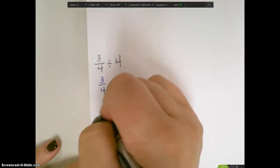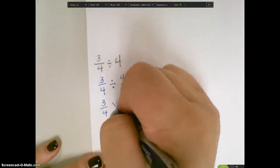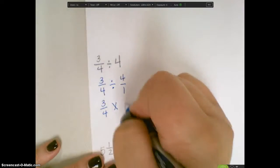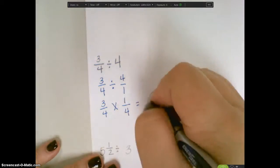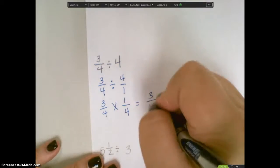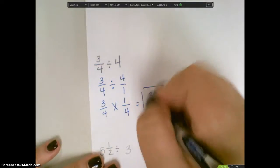Then I can keep the first fraction, change my division to multiplication, and change 4 over 1 to its reciprocal of 1 over 4. Now when I multiply across, 3 times 1 is 3, 4 times 4 is 16, and that would be my final answer.